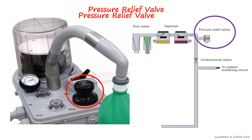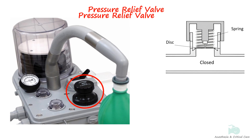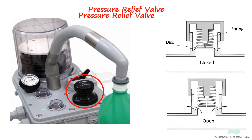The pressure relief valve is located on the back bar of the machine, downstream of the vaporizers or near the common gas outlet. Its purpose is to prevent high pressure from entering or leaving the machine toward the patient. Also known as a pop-off valve, it operates through a spring-loaded mechanism attached to a disc that closes the valve below the set pressure. As pressure within the system increases, the spring is pushed upward, releasing excess gas. Typically, the pressure relief valve opens at 35 kPa or 5 psi.